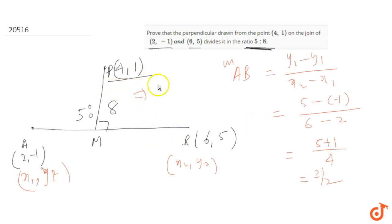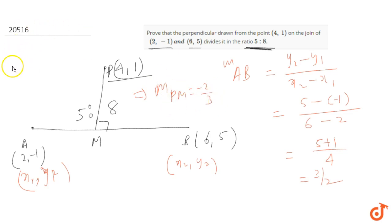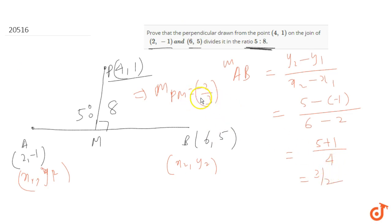So the slope of PM would be -2/3, because when two lines are perpendicular, the product of their slopes is -1. If you multiply -2/3 with 3/2, the answer will be -1, confirming our concept is correct.